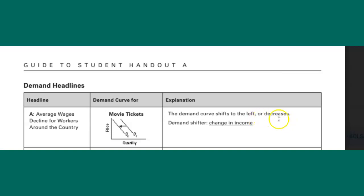So we're going to say this is decreasing to the left. The demand shifter is a change in income. And that's it. You move on to the next headline and you complete your demand items.